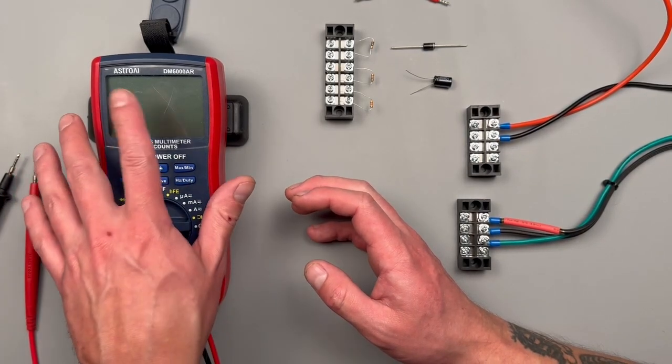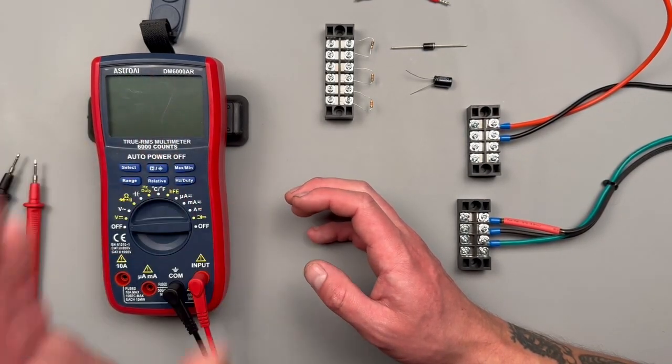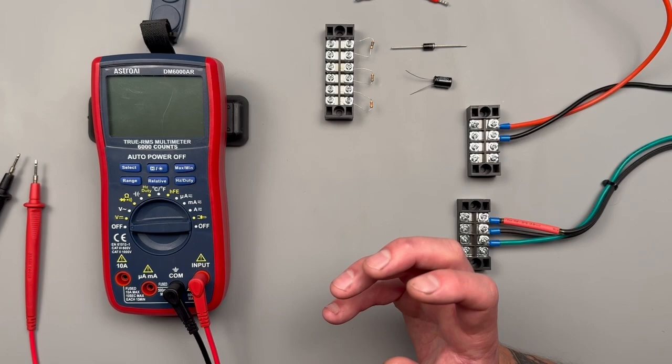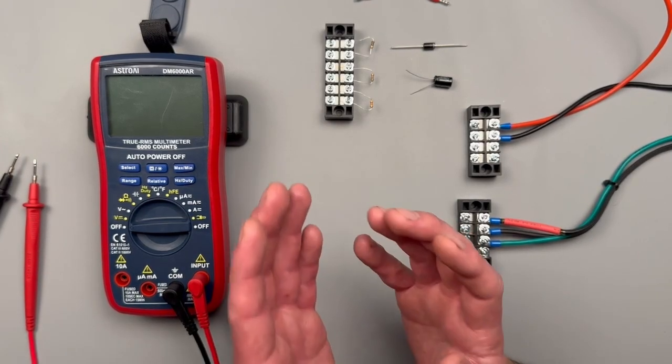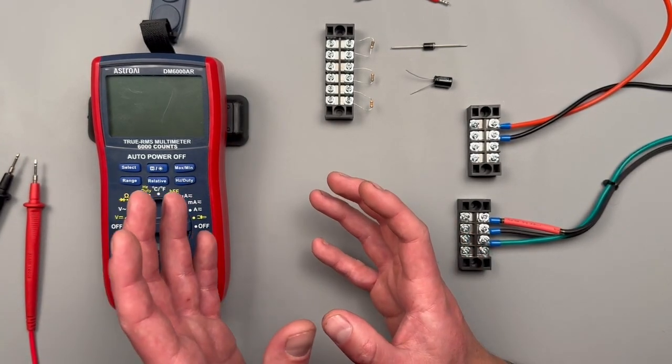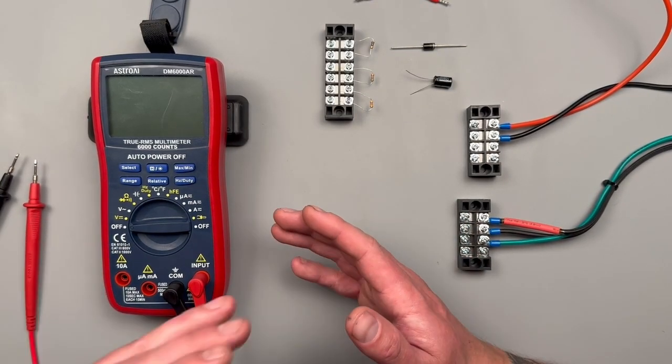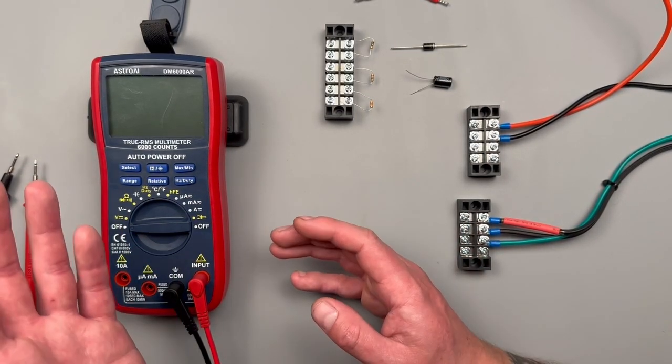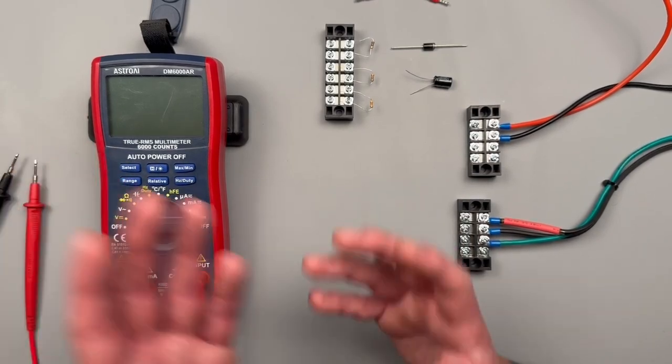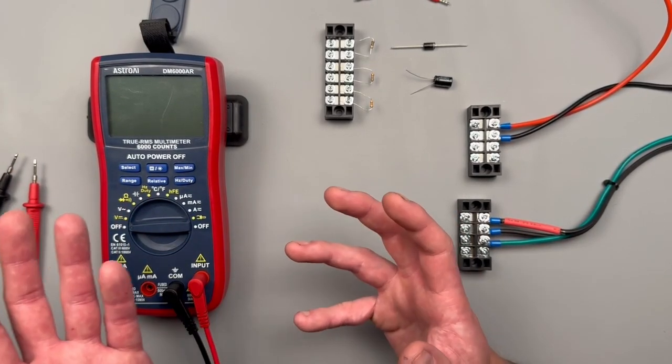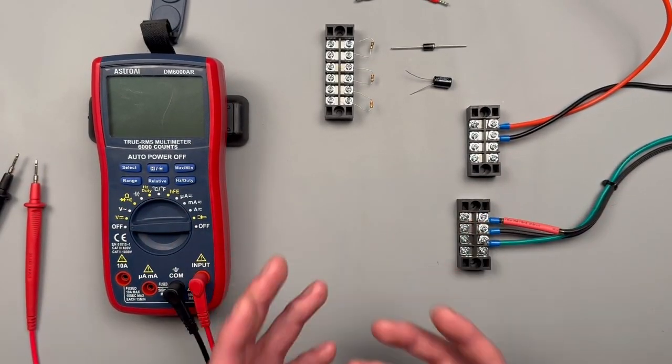Welcome back to another adventure in the garage. Today we're going to be going over all the test settings for the Astro AI DM6000 AR. This video is also going to be a tutorial for beginners for multimeters. A lot of these different settings you'll find across the board on many different multimeters, though they can vary a little bit from manufacturer or model.